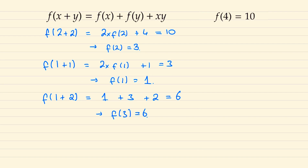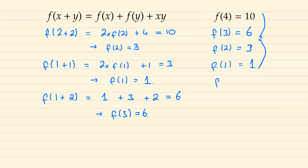But now we can notice a pattern here. We have f of 4 equaling 10, f of 3 equaling 6, f of 2 equaling 3, and f of 1 equaling 1. These numbers on the right are the triangular numbers, and so that has the form of f of n equal to one half n times n plus 1.